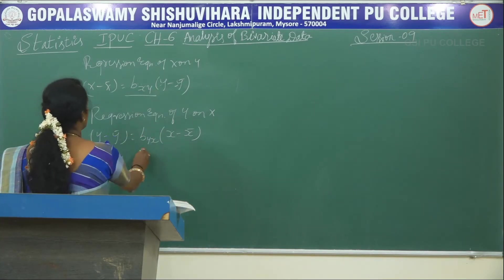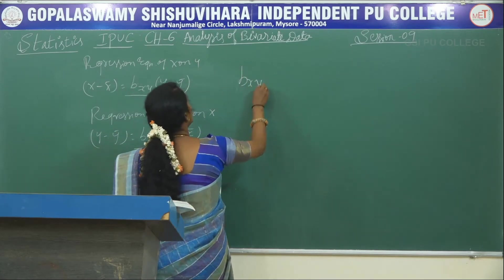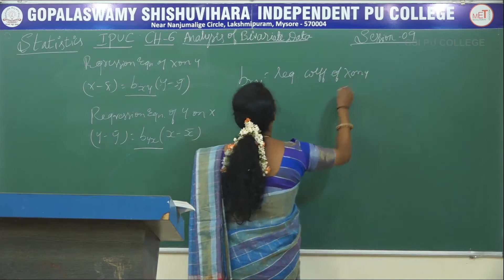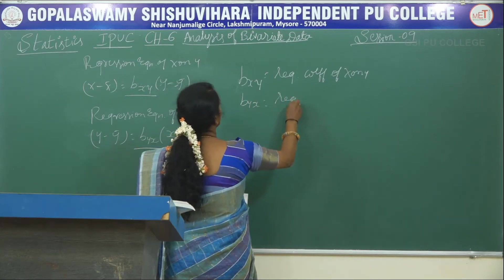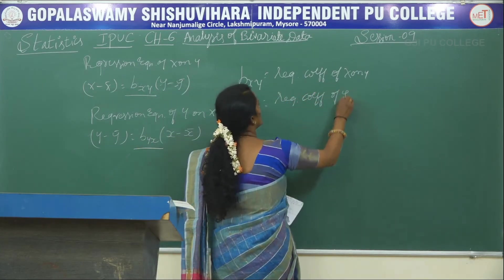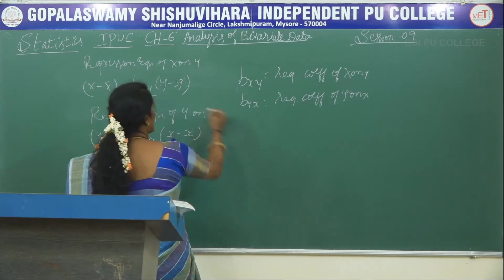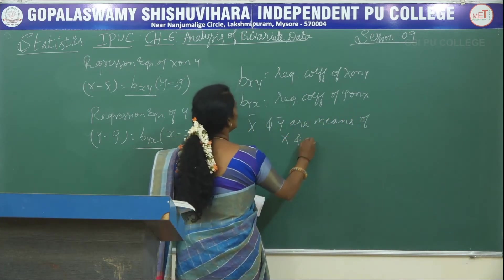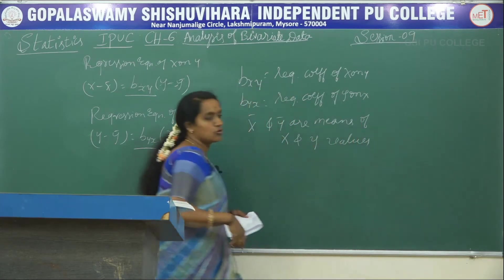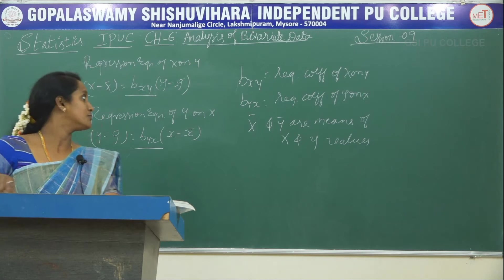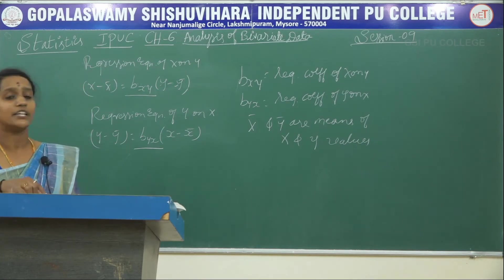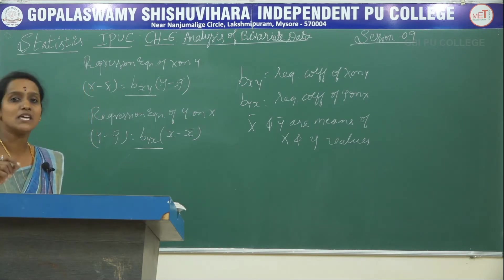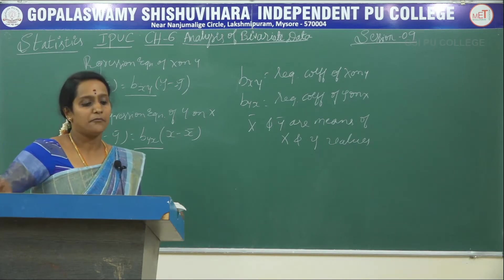Here, bXY is called the regression coefficient of X on Y, and bYX is called the regression coefficient of Y on X. X̄ and Ȳ are the arithmetic means of the X and Y values respectively.